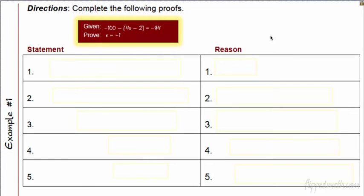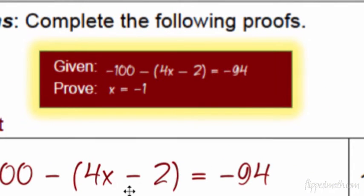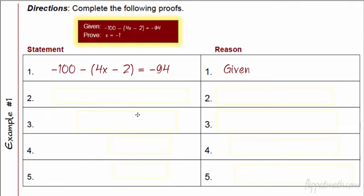We're going to start with an algebraic proof. We're going to write things out, and I'm going to go as quickly as I can here. If you remember what we do, we always start with the first statement being what they give to us, and our reason why is given. Now, what we're going to have to do is solve this equation until we get to x equals negative one. You might do it a couple of different ways — you might want to distribute first, or another person might want to add 100 to both sides first. So your proofs could look different. Your reasons have to match up with your statements, though.